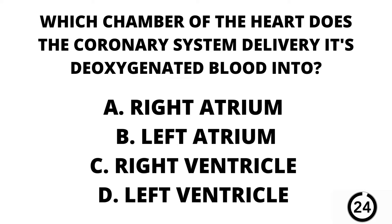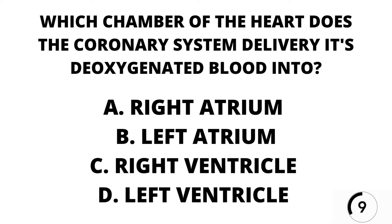Question number one. Which chamber of the heart does the coronary system deliver its deoxygenated blood into? A. The right atrium. B. The left atrium. C. The right ventricle. Or D. The left ventricle.